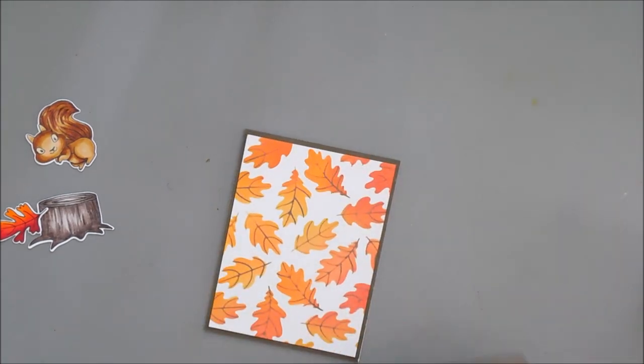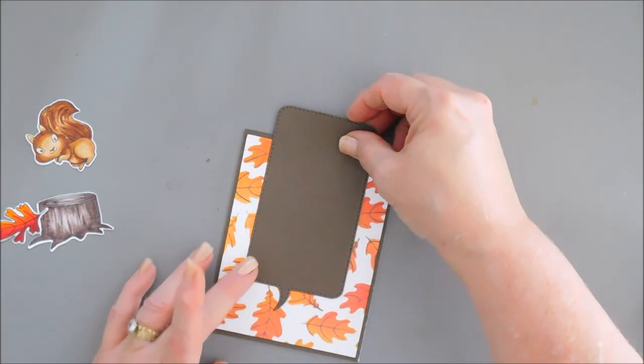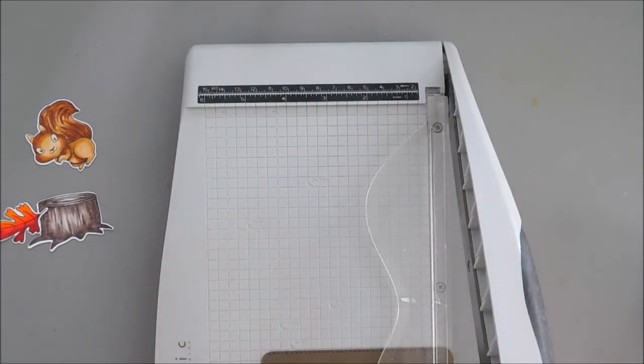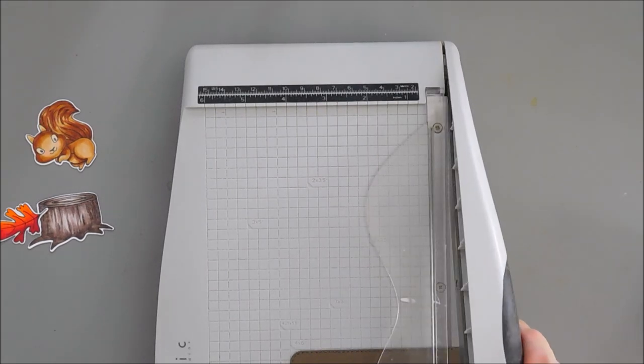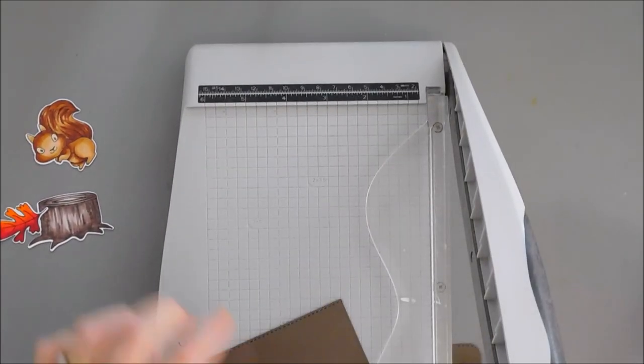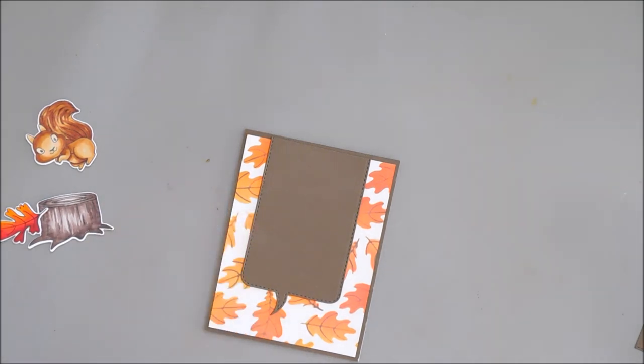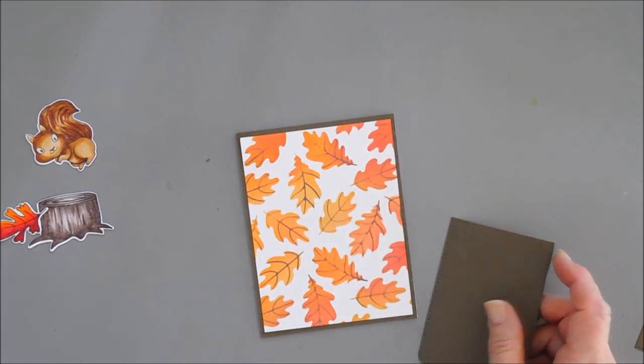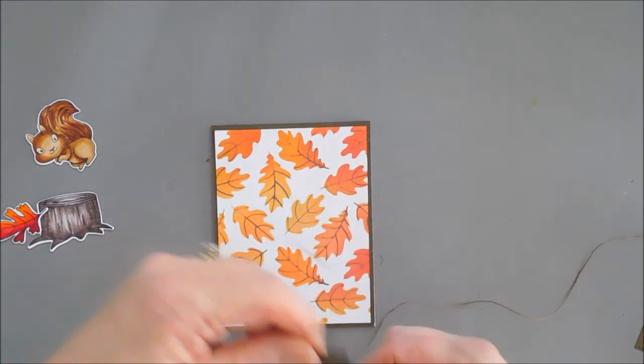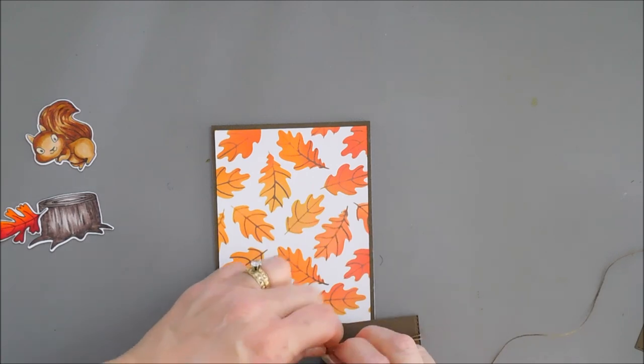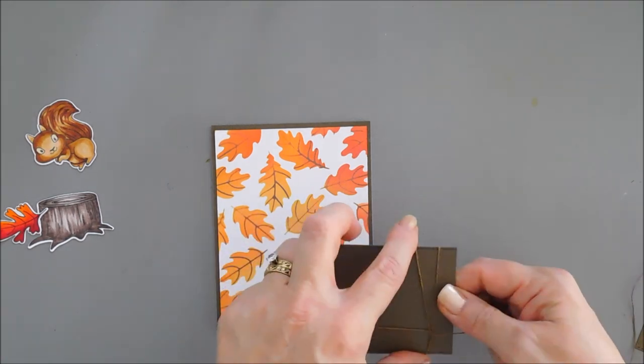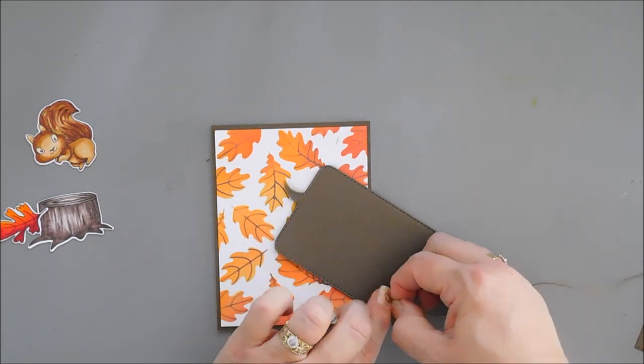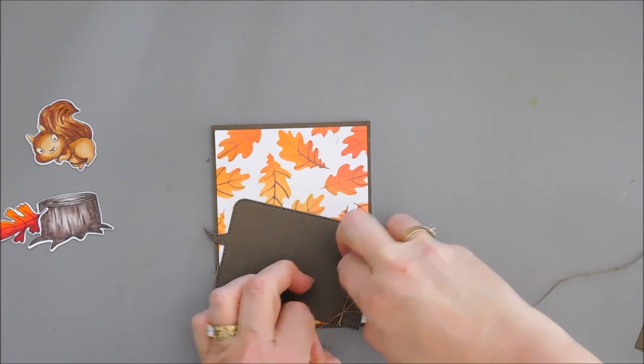Now for our Speech Bubble, I'm going to trim off a little bit off the top. Maybe about three quarters of an inch. And because fall cards, I love to add some twine. I have some brown twine. And I'm going to wrap it around the top of my Speech Bubble and tie a bow. I'm going to wrap it around twice and tie a bow off to the right. And then we're going to pop this up and put it on our card base with some foam adhesive.